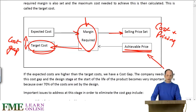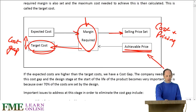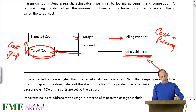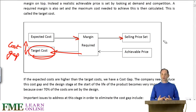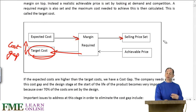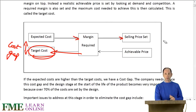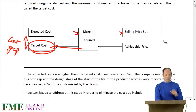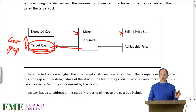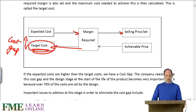We then look at ways to close that gap. It might be through designing a process in a different way, or having the production process put together differently. It might be the design of the product itself — making it out of different material, sourcing things from other places, and so on. We target that cost and aim to achieve it over a relatively short-term period.